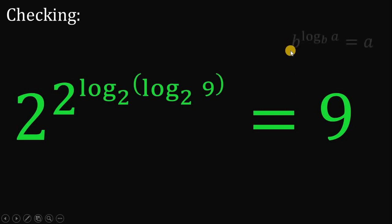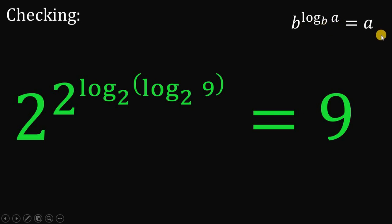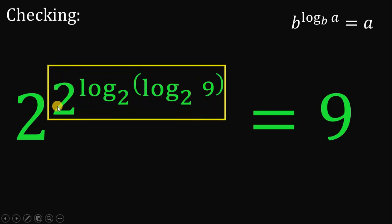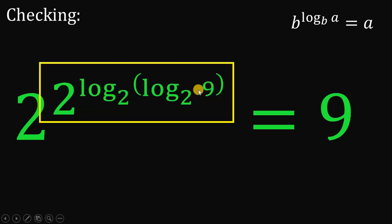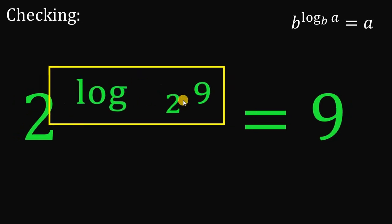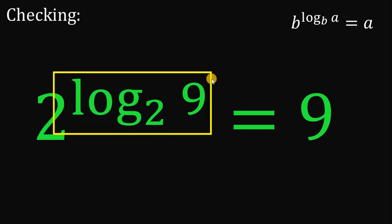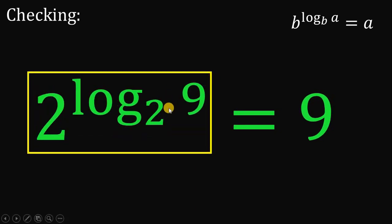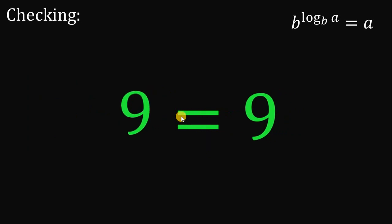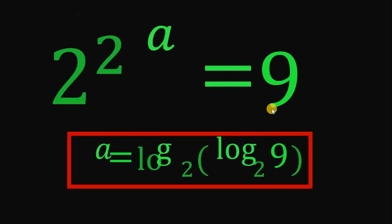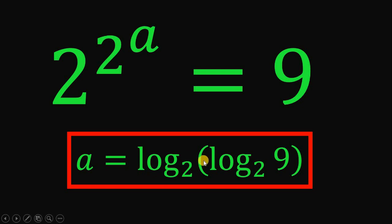Now, let's recall some laws of logarithm. Take note that if we have B raised to the logarithm of A to the base of B, it is just equivalent to A. Let's focus on the expression 2 raised to logarithm of 9 to the base of 2, to the base of 2 — this is just equivalent to logarithm of 9 to the base of 2. Then, 2 raised to logarithm of 9 to the base of 2 is, again using this identity, just equivalent to 9. Therefore, our answer is definitely logarithm of logarithm of 9 to the base of 2, to the base of 2.